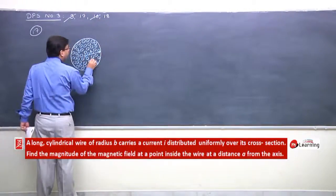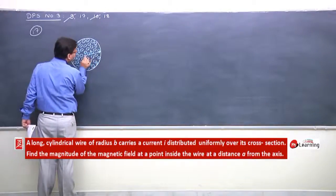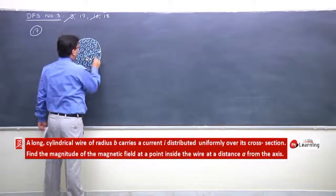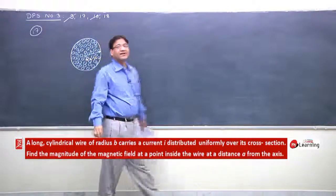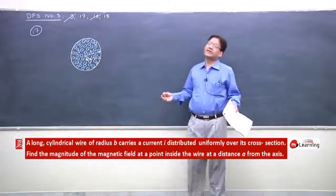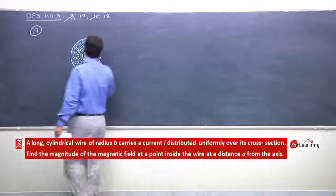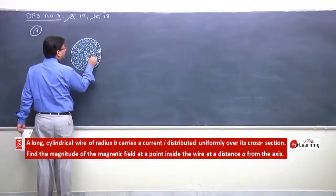At some point A at this distance, here is point B. We need to find the magnetic field at this point. Using Ampere's circuit law, we imagine a loop like this.